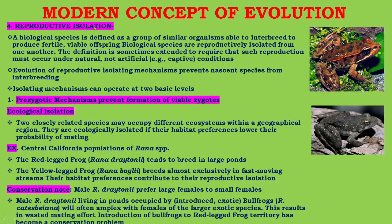The fourth feature of the modern concept of evolution is reproductive isolation. A biological species is defined as a group of similar organisms able to interbreed to produce fertile, viable offspring under natural conditions. The definition of reproductive isolating mechanisms prevents nascent species from interbreeding. Isolating mechanisms can operate at two basic levels: first, pre-zygotic mechanisms, and second, post-zygotic mechanisms. Pre-zygotic mechanisms prevent formation of viable zygotes. First is ecological isolation.